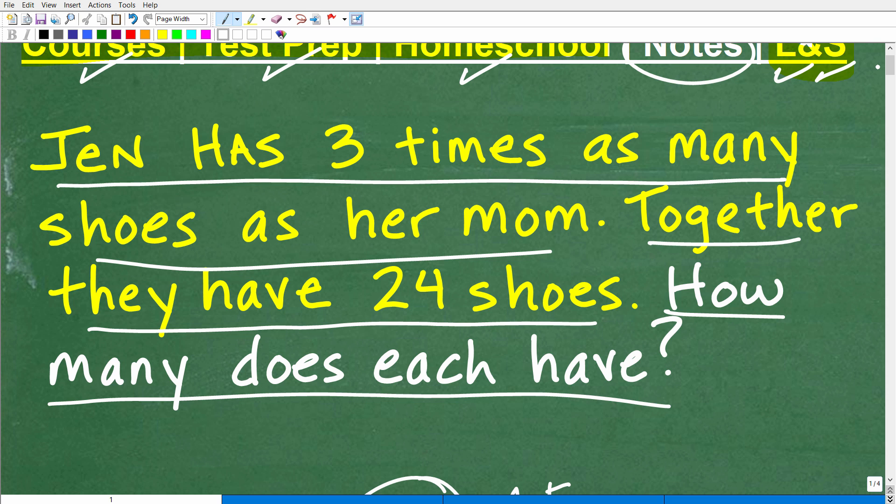Step number two is to reread the problem. Don't read the problem once. Read the problem twice to really make sure you got the information. And guess what? But the third step is to read the problem one last time. You need to read these problems at least three times at a minimum. But the third time you read the problem, really make sure you understand what is being asked. And a great way to know where the question's at is to go where the question mark is in the problem and back up. So we want to know how many does each have? How many shoes does each person have? Jen and her mom.